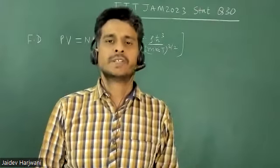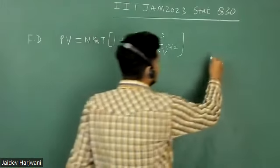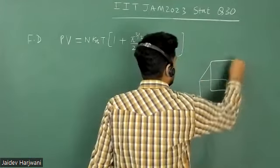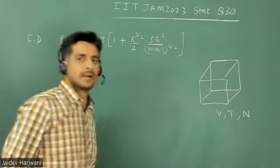Hello friends, so in this question from JAM 2023, a box is given and this box has volume V, equilibrium temperature T, and number of particles N.